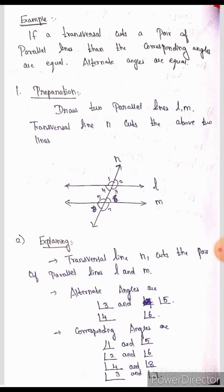If you look at this example — how do you use the steps to make an example? Let's take an example. If a transversal cuts a pair of parallel lines, then the corresponding angles are equal. This is a universal truth.